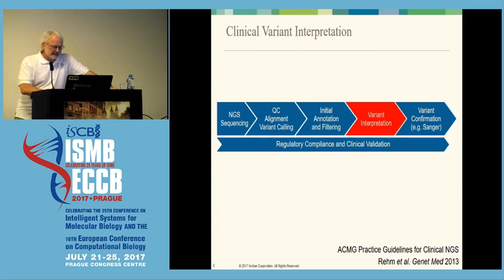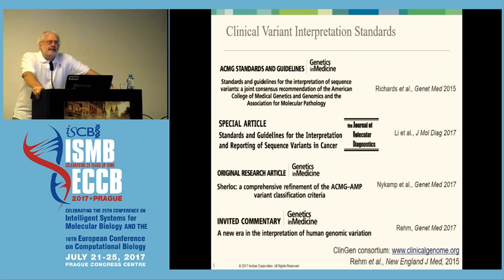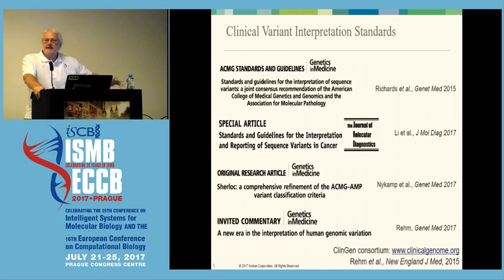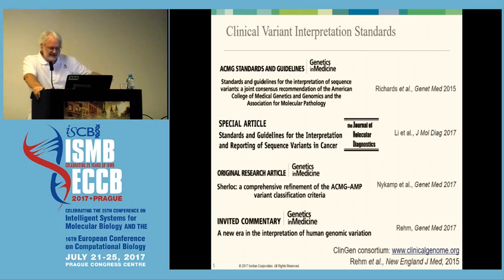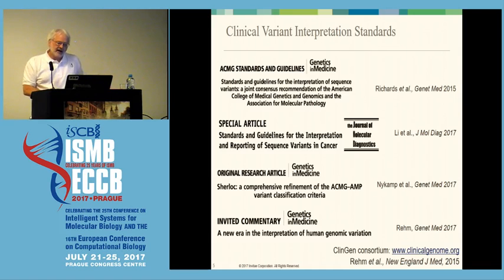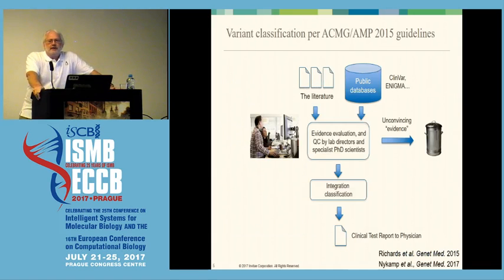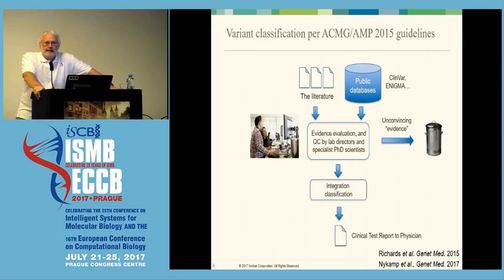There are guidelines and practices that have been established by various medical practice committees as to how to do this. People who work with these data should be familiar with many of these papers, including the ACMG and AMP guidelines on the subject. To vastly oversimplify what they say: in the process of interpreting a variant, you need to have experts in that specific domain.